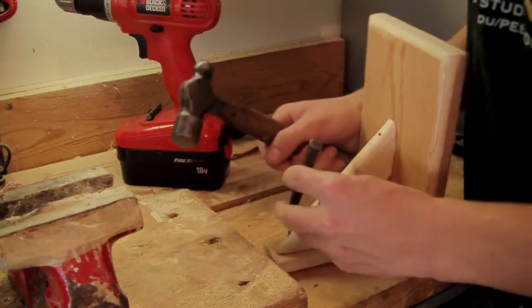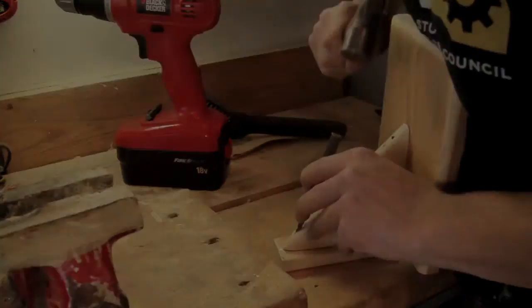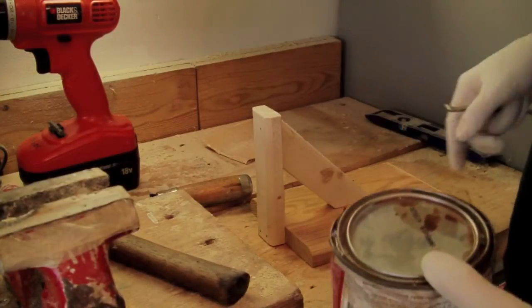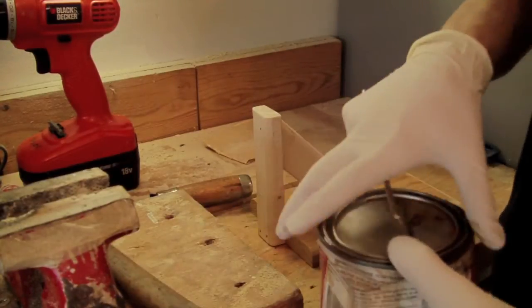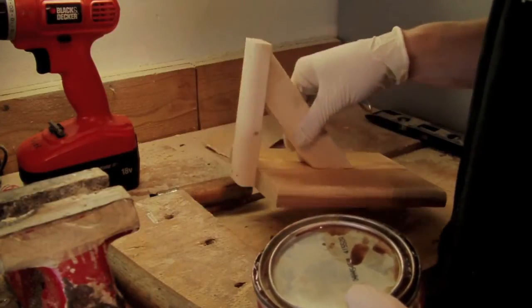I like to use a punch to kind of countersink the nails. All the nails put in, it's time to put some stain on it. But before you put stain on it, make sure that you brush all the dust off or else it won't cover well.